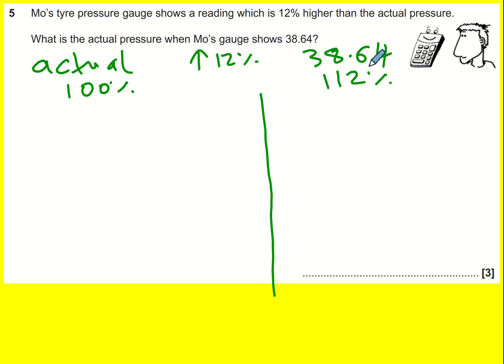So if I've got that I can write down that 38.64 is equivalent to 112%. And then a good strategy is to use, we call it the unitary method, to basically find out what 1% is and you can do that by dividing through by 112. If you do that then you get 0.345 and then we can times through by 100 to give us 100% and that's going to be 34.5.